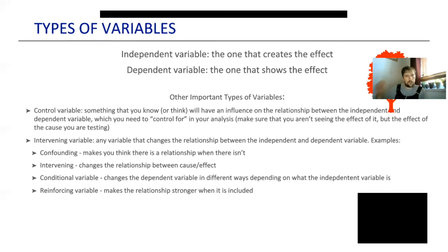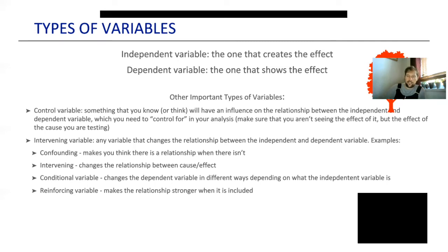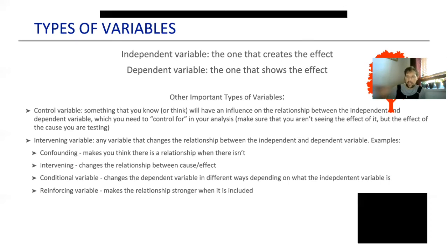An intervening variable changes the relationship between the independent and dependent variable. For instance, the example where girls might be more interested than boys in therapy: if I set up my study so that anybody can sign up and I get 90% girls and 10% boys in the therapy group, that's an intervening variable because it's messing things up. I didn't have a control group set up so that half the people don't get therapy and are very similar to the group that does. Gender might be an intervening variable that changes who signs up and the kinds of results they get.